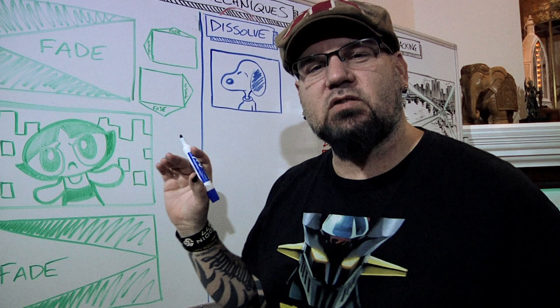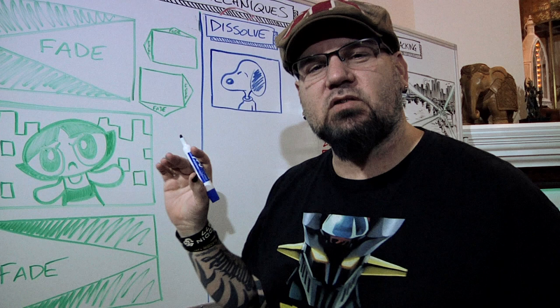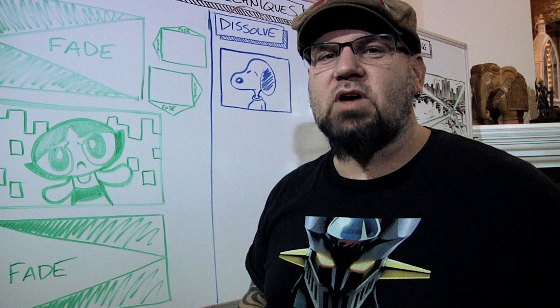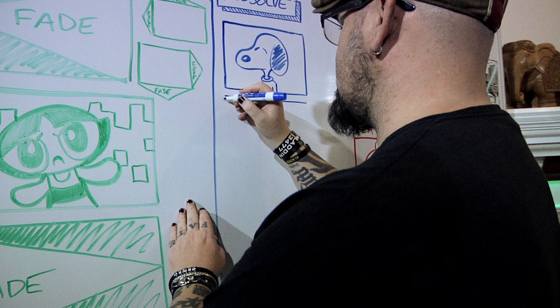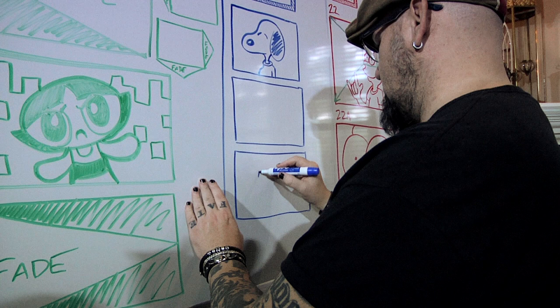What this means is Snoopy is going to start to disappear, and at the very moment Snoopy is disappearing, we've got Charlie Brown appearing. I'm going to draw the dissolve last, but I'm going to draw what we're dissolving to first. So here we are down here — I'm going to have Charlie Brown.